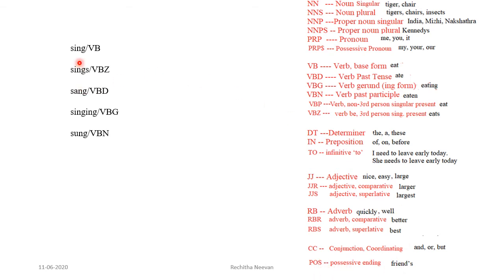Now let's see an example. 'Sing' is the base form of a verb, so we can use the tag VB. 'Sings' — sing here is third person singular present, so we can use VBZ.